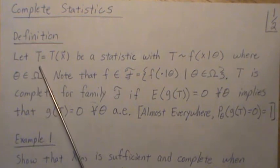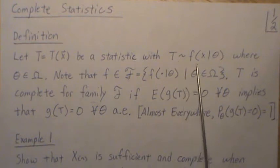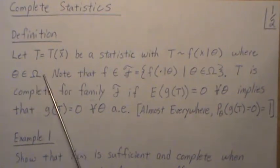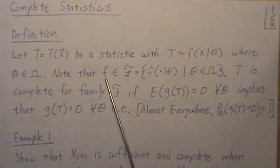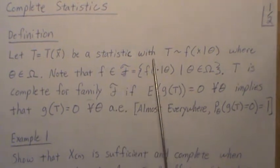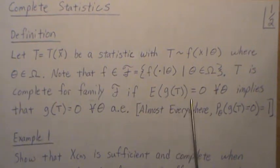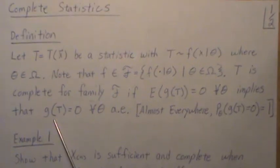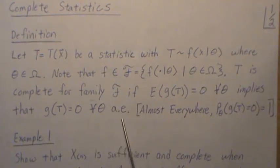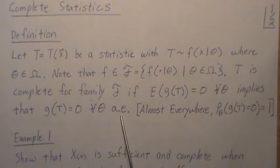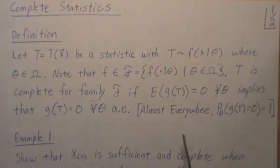The definition is this: let t be a statistic — a function of our data — with t following a distribution, either continuous or discrete, where the parameter theta lives in the parameter space omega. Let this density be in a family of distributions indexed by theta. T is complete for the family if the expected value of every function of our statistic equals zero for all theta implies that g of t equals zero almost everywhere. If this is true except for one point, it's still true because that point has probability zero, so the probability that g of t equals zero is one.